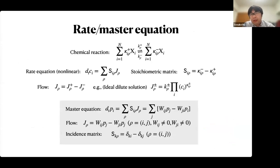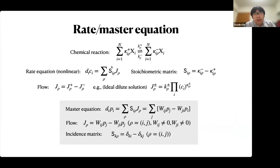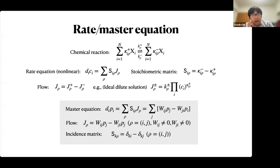Next, I would like to consider the generalization for the rate equation in chemical thermodynamics. We consider the following rate equation, which is a generalization of the continuity equation, because the stoichiometric matrix S is a kind of a differential operator corresponding to the minus divergence. This rate equation is also a generalization of the master equation: if we consider the incidence matrix as a stoichiometric matrix, we can mathematically obtain the master equation.